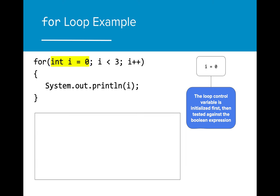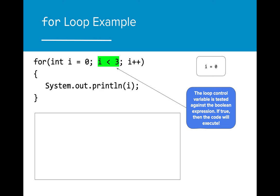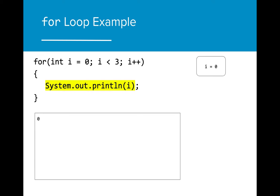When the program gets to the for loop, the first thing that occurs is the initialization of the loop control variable. In this case, the variable i is assigned to the value zero. We are going to pay close attention to the value of i throughout this program. The next thing that occurs is a test of the Boolean expression. Since i is less than three, the expression evaluates to true and the for loop will execute. The value of i is then printed to the console, which now holds the value of zero.